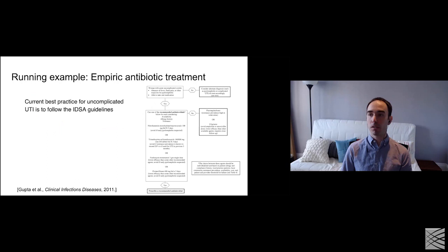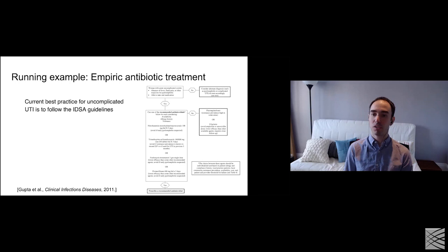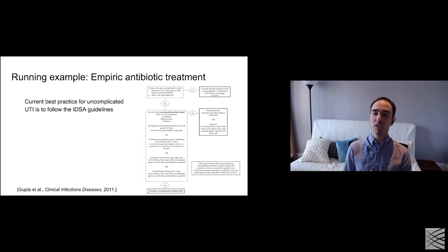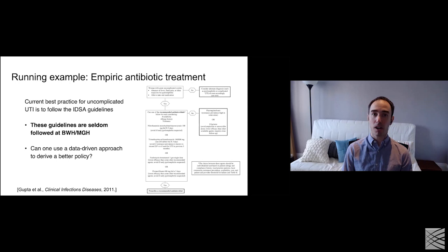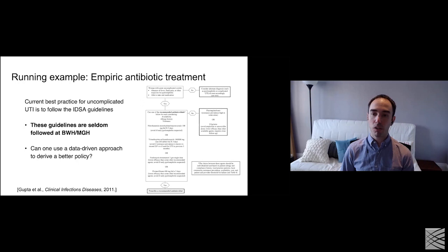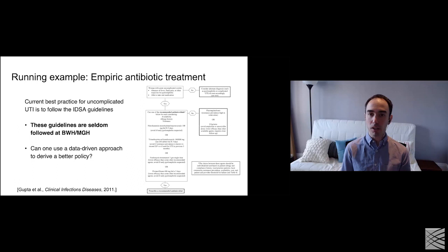The current best practice for prescribing empiric antibiotics for uncomplicated UTIs is to follow the IDSA guidelines. These look at factors such as the patient's allergy history and whether they've previously been observed to have resistance to various antibiotics, and based on that recommend a first-line antibiotic. One of the big challenges with these guidelines is that they're very seldom followed. As part of our study, we looked at Partners Healthcare — Brigham Women's Hospital, MGH, and outpatient clinics — and found these treatment guidelines were very seldom followed.